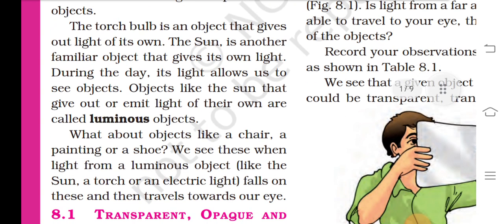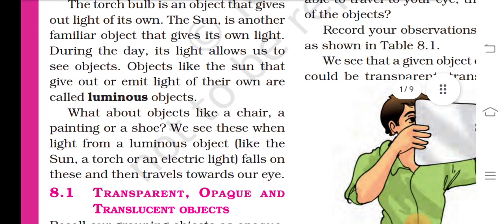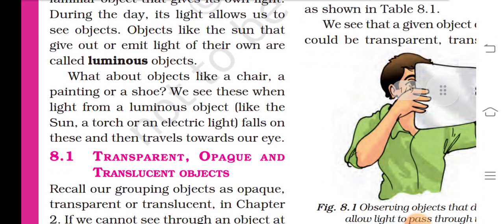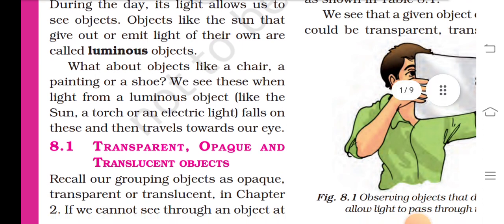The torch bulb is an object that gives out light of its own. The sun is another familiar object that gives its own light during the day. Its light allows us to see objects.